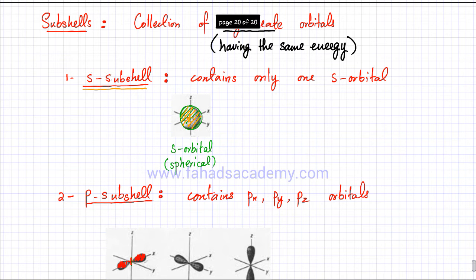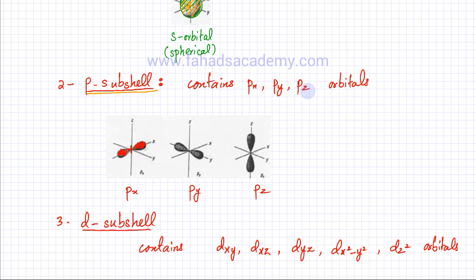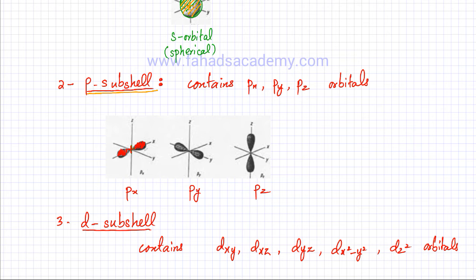Similarly, we have another subshell called the P-subshell. The P-subshell is actually made up of three different P-orbitals: Px, Py, and Pz — the three dumbbell-shaped regions we studied earlier. If an electron is in the Px orbital, the probability of finding that electron would show two lobes on either side of the nucleus. Px means the lobes are on the x-axis, Py means the lobes are on the y-axis, and Pz means the lobes are on the z-axis. Looking at the three orbitals, they're basically identical, which is why we group them together — the P-subshell contains three identical orbitals. The only difference is their orientation.